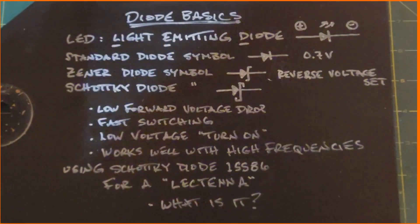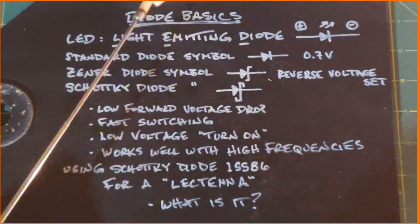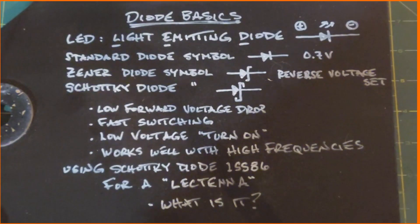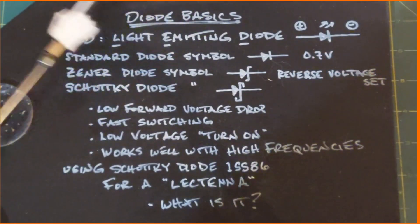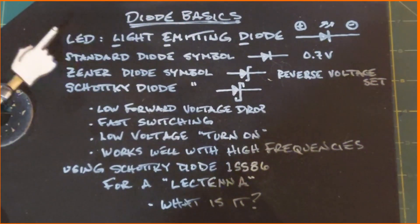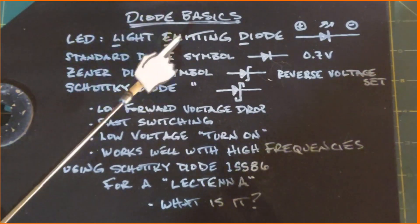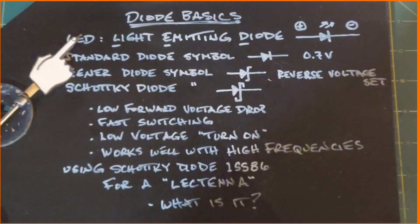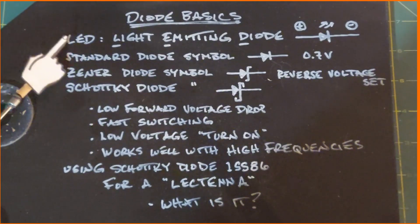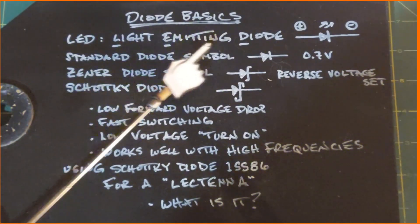In this video we are going to look at some basics of a little thing called a diode. The most common one we all know is an LED - the L-E-D stands for Light Emitting Diode. So the LEDs that you see which are all over the place nowadays are types of diodes.